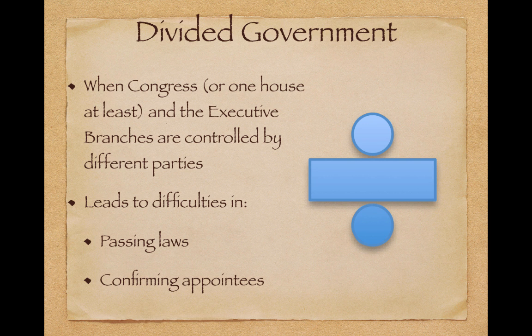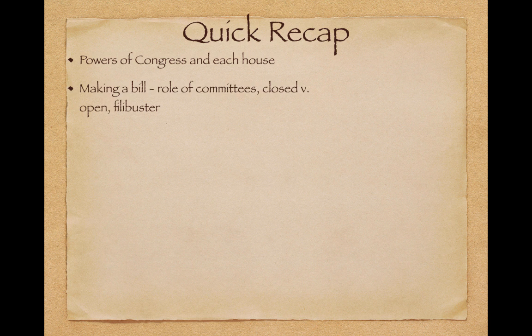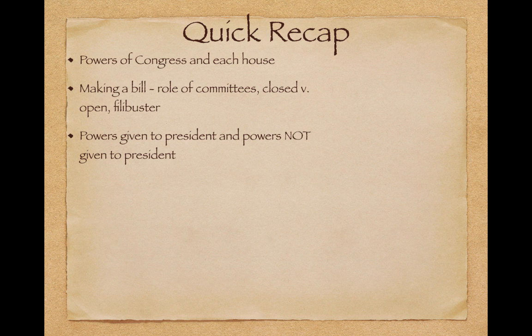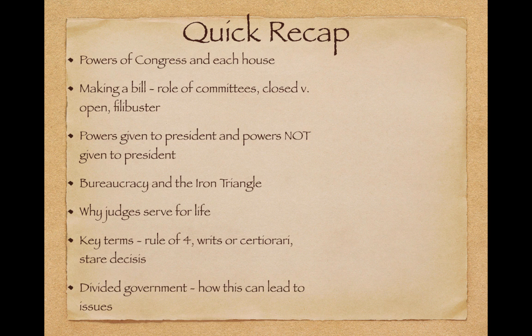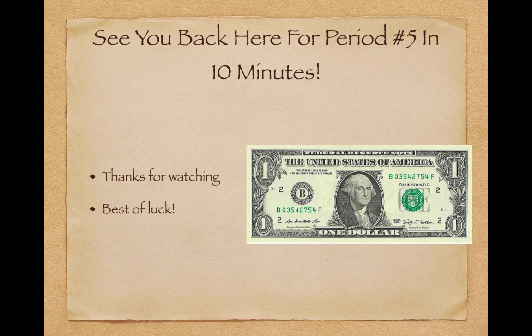Quick recap: powers of Congress and each house — know the specific ones for each; know how a bill is made, committees, closed versus open rule, and the filibuster (Senate only). Powers given to the president versus powers not given — be able to identify them. Know the bureaucracy and the iron triangle. Judges serve for life so they are not influenced by public opinion and can make decisions they think are right regardless of how the public feels. Key terms: rule of four, writ of certiorari, stare decisis, and divided government. Look forward to seeing you for Unit Five — good luck, especially in May!